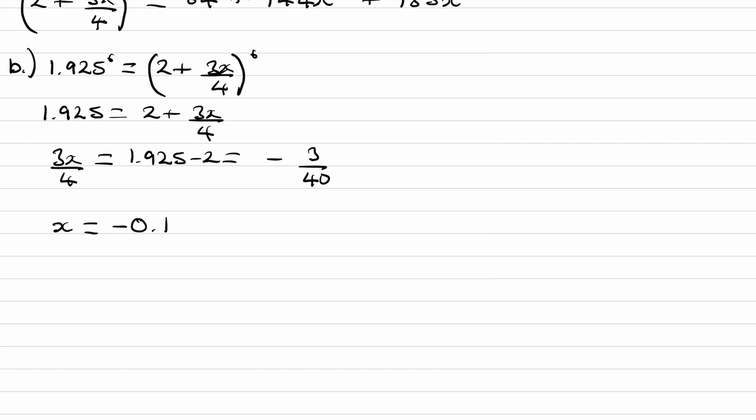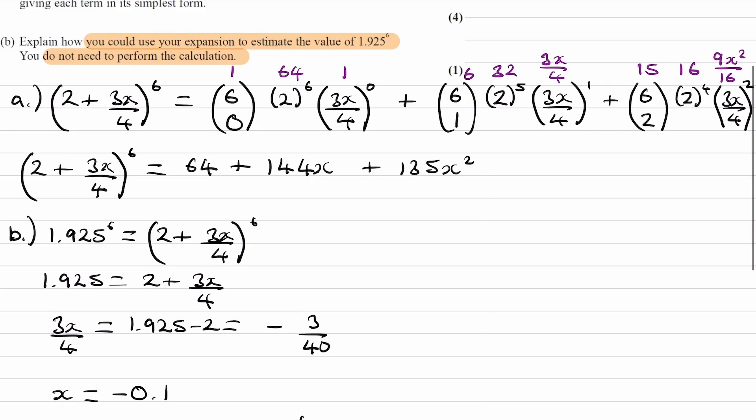What this has basically shown us is that 1.925 to the power of 6 can be rewritten as 2 plus 3x over 4 with the x being minus 0.1, all of this to the power of 6. Why is that useful? That's useful because we know the expansion for the first few terms of 2 plus 3x over 4 to the power of 6. We know it's these three terms here.